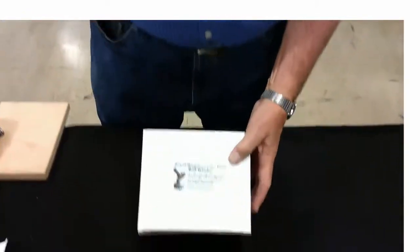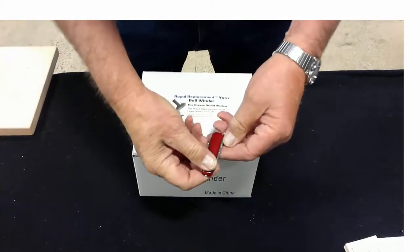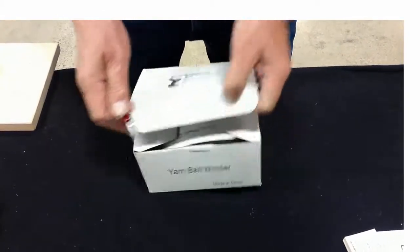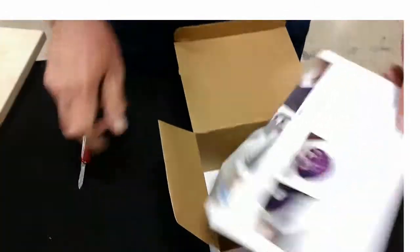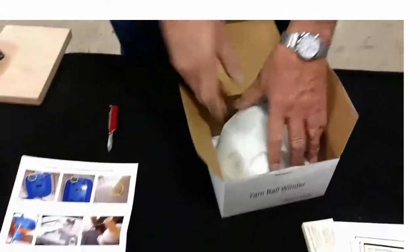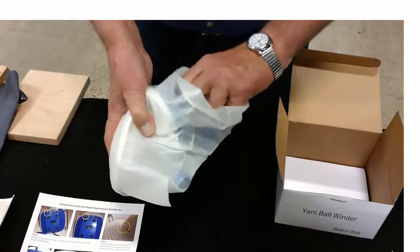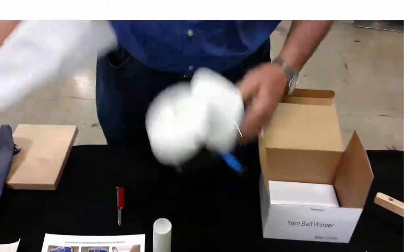When you purchase it from us, it comes in this type of box. Let's open it up. What you'll find inside will be an instruction sheet and the ball winder in a nice bag. There's your cone and here's the ball winder.